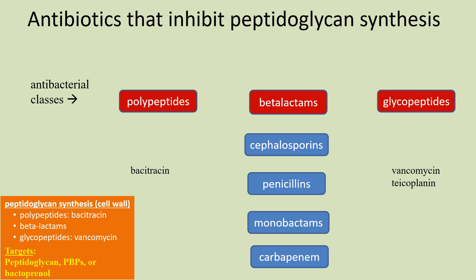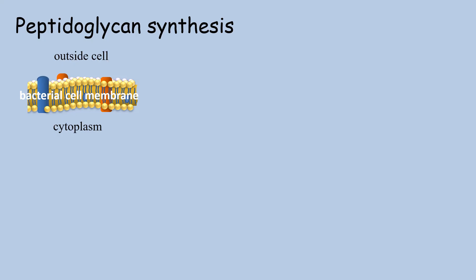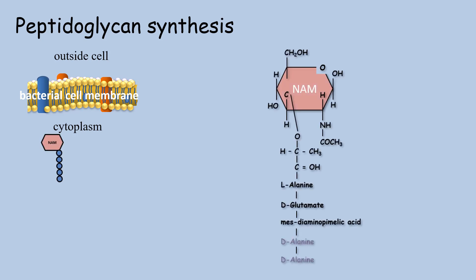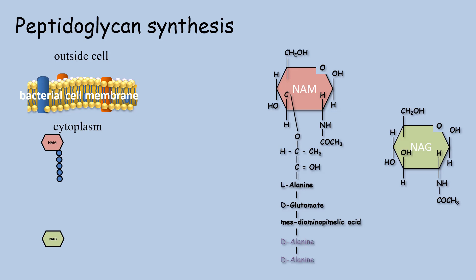In order for you to understand how these classes prevent peptidoglycan synthesis, I'll include a review on how peptidoglycan is made. Peptidoglycan consists of a long strand of polysaccharides made of repeated NAM, which stands for N-acetyl muramic acid, and NAG, which represents N-acetyl glucosamine. These are both monosaccharides.